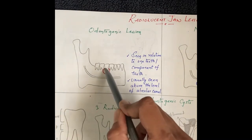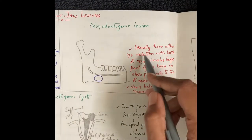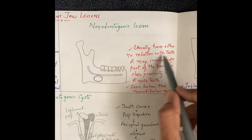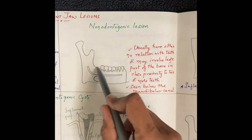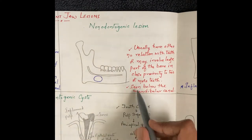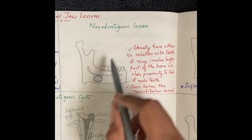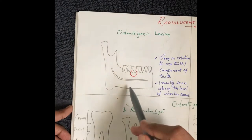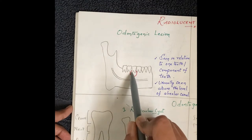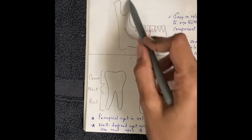Non-odontogenic lesions usually have either no relation with the teeth, or may involve a large part of the bone in close proximity to two or more teeth. These lesions are located below the mandibular canal. So: non-odontogenic lesions are below the mandibular canal, and odontogenic lesions are above the level of the alveolar canal, in relation to the teeth.